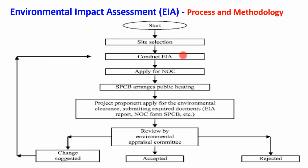Once the EIA is done, a detailed EIA report should be prepared. After getting the NOC and with no public objection, you can apply for Environmental Clearance. If the EIA is satisfactory and the NOC is okay from the State Pollution Control Board rules and regulations point of view, you may get Environmental Clearance, subject to conditions updated from time to time.